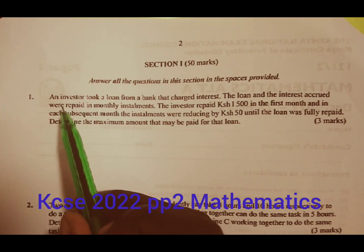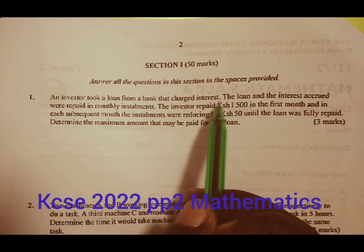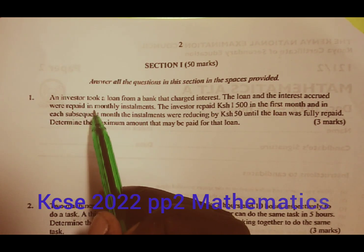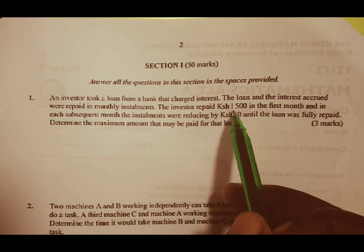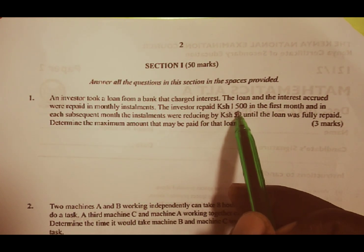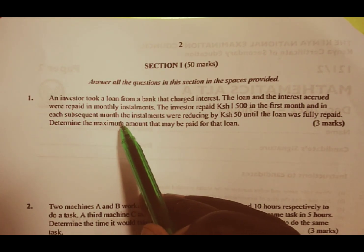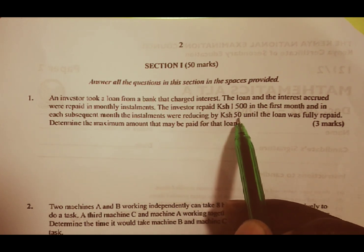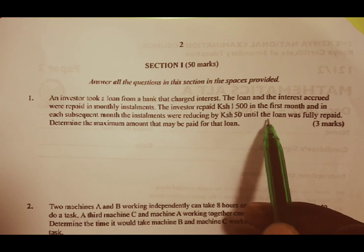Our question number one reads: An investor took a loan from a bank that charged interest. The loan and the interest accrued were repaid in monthly installments. The investor repaid Ksh 1,500 in the first month, and each subsequent month the installments were reducing by Ksh 50 until the loan was fully repaid.